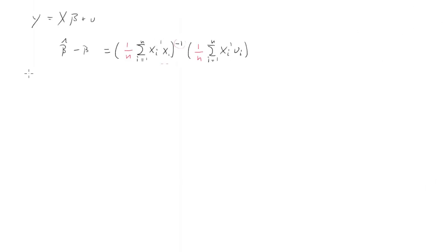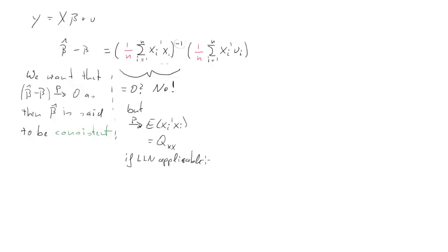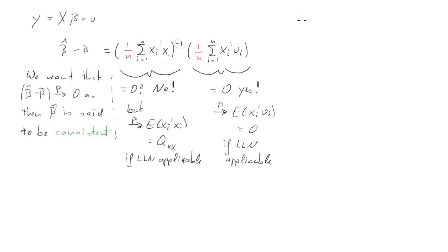Going back to our example: we want beta-hat minus beta to converge in probability to zero, and then we call beta-hat consistent. For the first term, we will be able to establish that (1/n) Σ xi' xi converges in probability to E[xi' xi], which we call Q_xx. For the second term, (1/n) Σ xi' ui converges in probability to E[xi' ui] — both provided a law of large numbers is applicable.